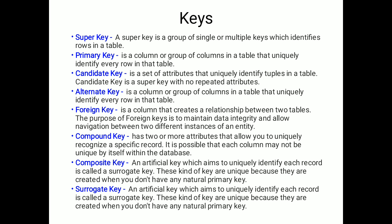Alternate key is a column or group of columns in a table that uniquely identifies every row in that table. Foreign key is related to the primary key — whatever primary key we create in one table, that same attribute becomes the foreign key in another table.